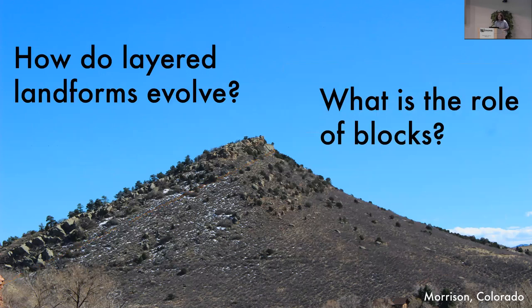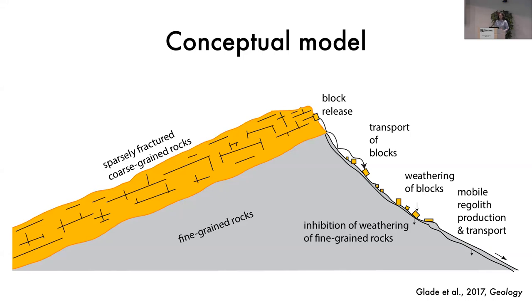We want to ask two main, pretty fundamental questions about these landscapes. How do they evolve over time? And what is the role of these discrete blocks that aren't usually treated in hillslope models? Because hillslope processes have happened over long periods of time, hundreds to thousands, millions of years, numerical modeling is a really good approach to try to understand.